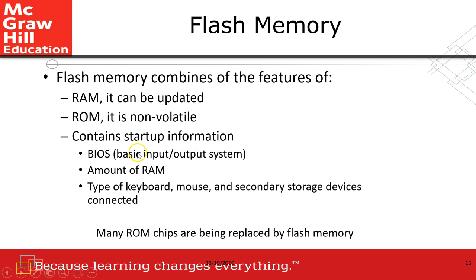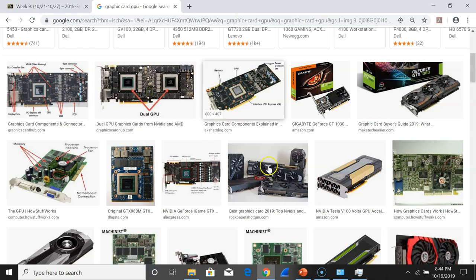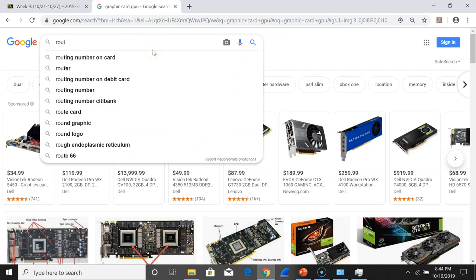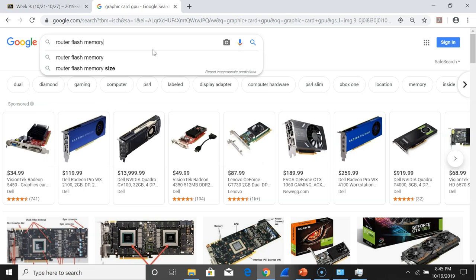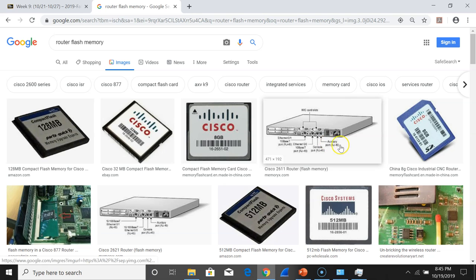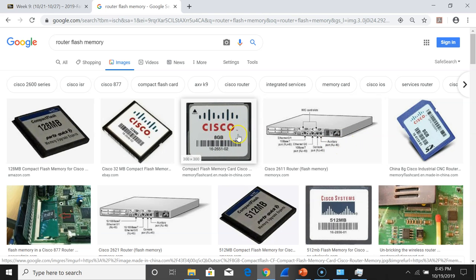Flash memory is basically a combination of RAM and ROM. It contains startup information like BIOS, the amount of RAM, the type of keyboard, and so on. For example, when you buy a router, it normally has a small chip — that is called flash memory. It contains the BIOS, amount of RAM, and keyboard configuration.